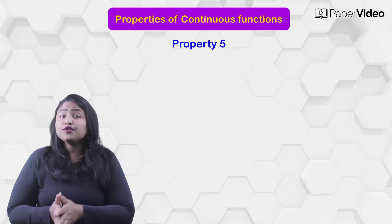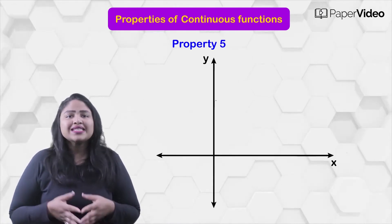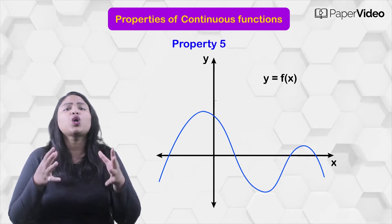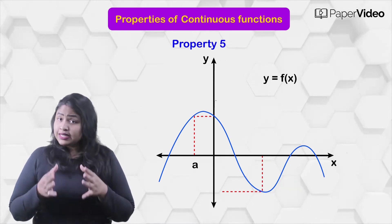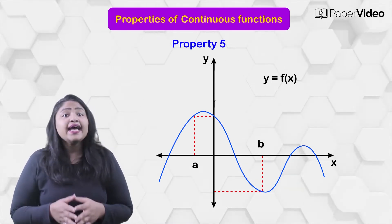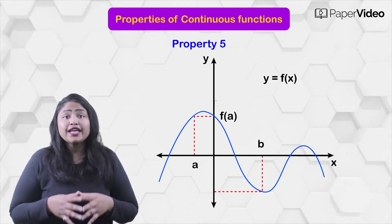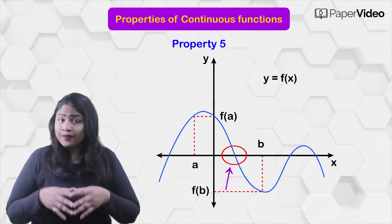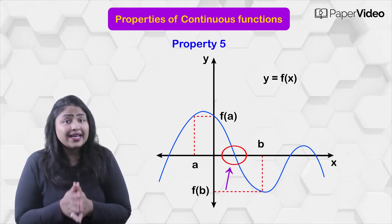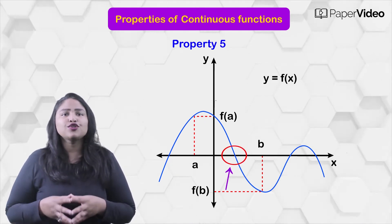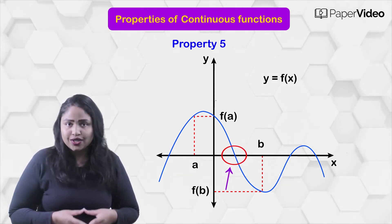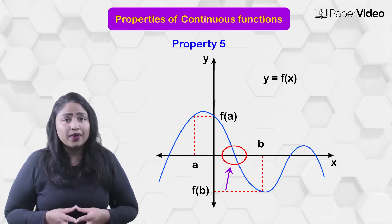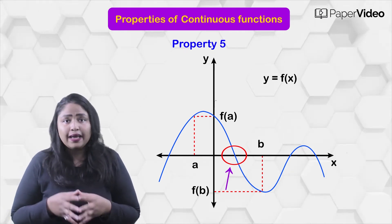According to the fifth property, if f is a continuous function defined on a closed interval [a, b] such that f of a multiplied by f of b is less than 0, then there exists at least one solution of the equation f of x equals to 0 in the open interval (a, b).